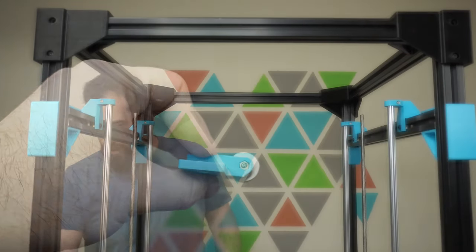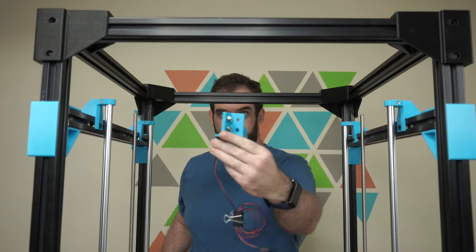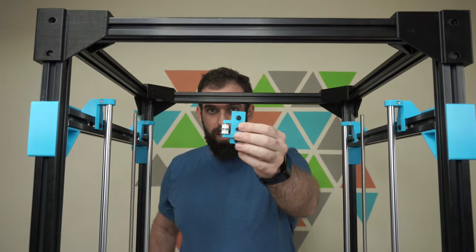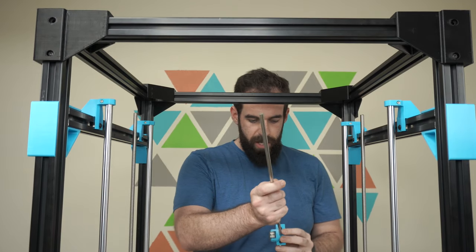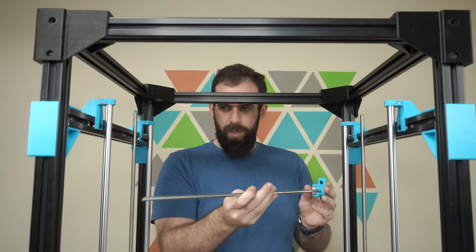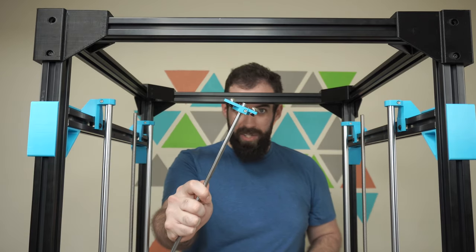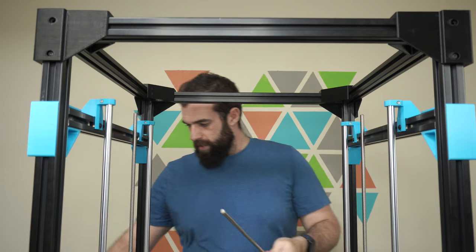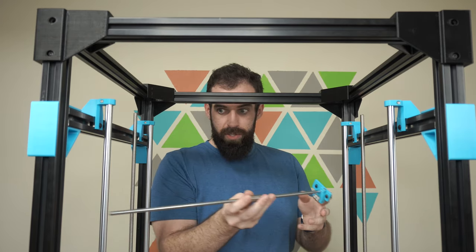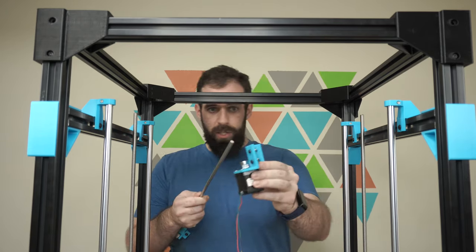I've got the stepper motors mounted, I've got the pulleys mounted, and I'm going to go ahead and insert the rods on the pulley mount. When I do that, I'm going to push it through and leave a little bit sticking out like that. We'll put our bearing on like this, and then we'll insert the whole thing into the stepper mount.